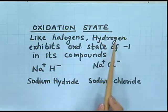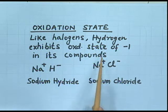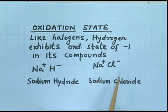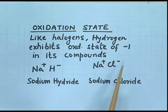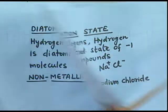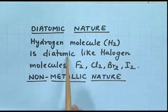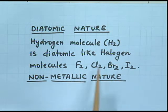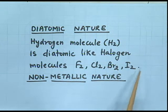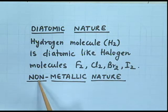Oxidation state: like halogens, hydrogen exhibits an oxidation state of −1 in its compounds. Comparing sodium hydride and sodium chloride: hydrogen is in the −1 state as a hydride ion, and similarly chlorine is in the −1 state as a chloride ion. Diatomic nature: hydrogen molecule exists as H₂, just like halogens which also exist as diatomic molecules — F₂, Cl₂, Br₂, and I₂. Like halogens, hydrogen is also non-metallic.